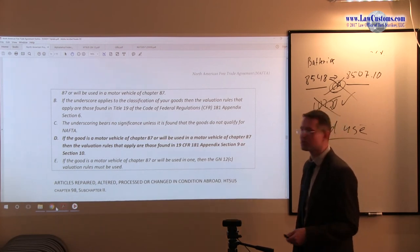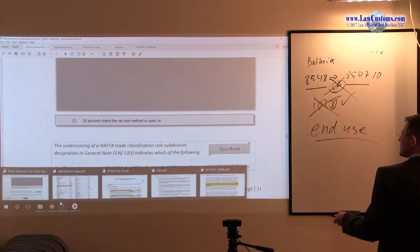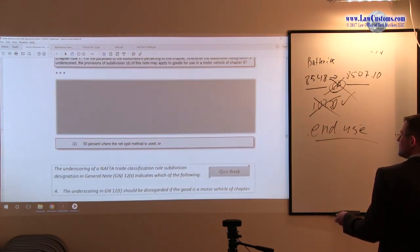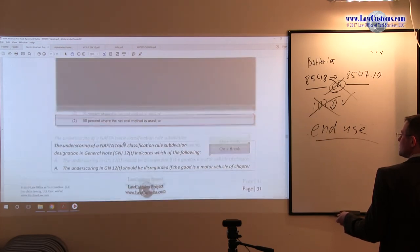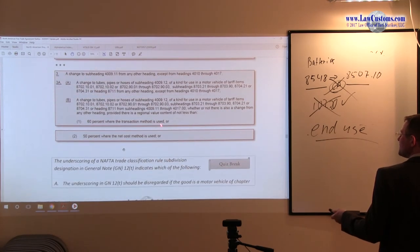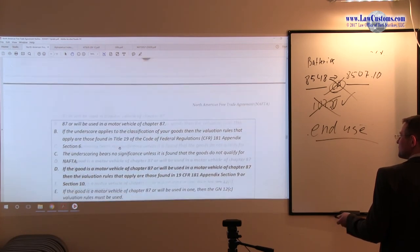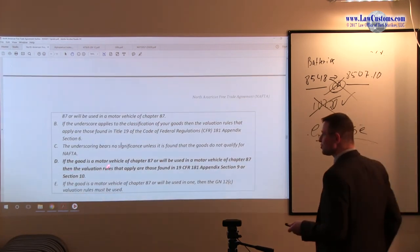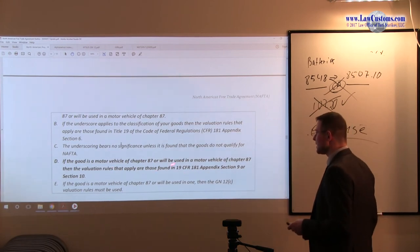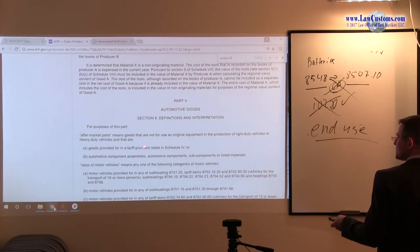We are talking about the rubber products over here. Then the valuation rules that apply are those found in 19 CFR 181 appendix section 9 or section 10. So going from appendix, automotive goods start from section 8. Then going down to section 9, light duty.